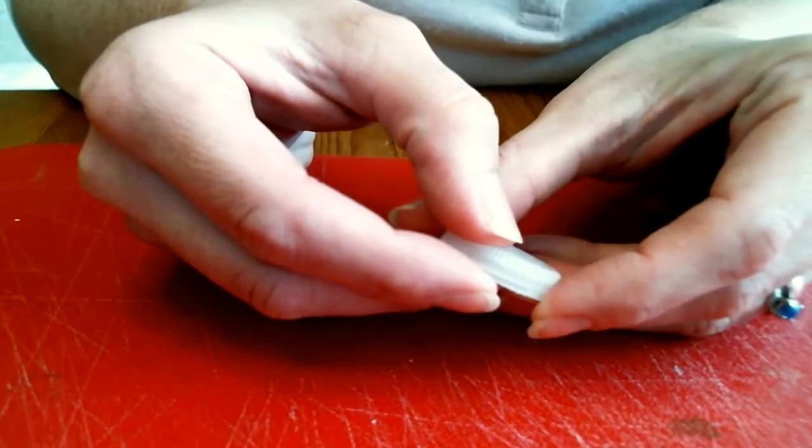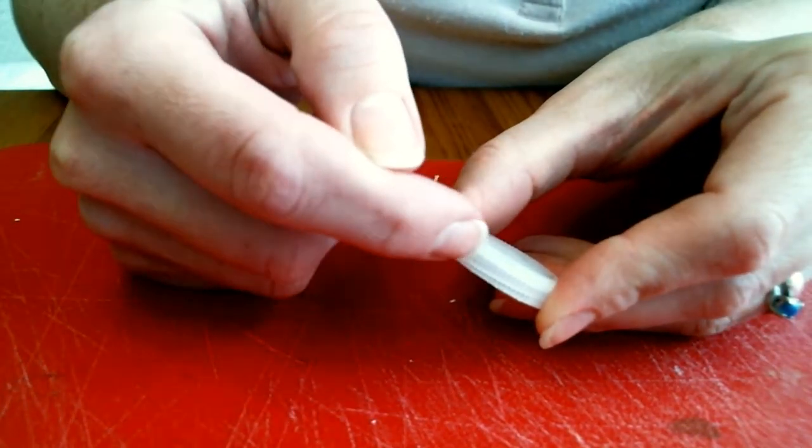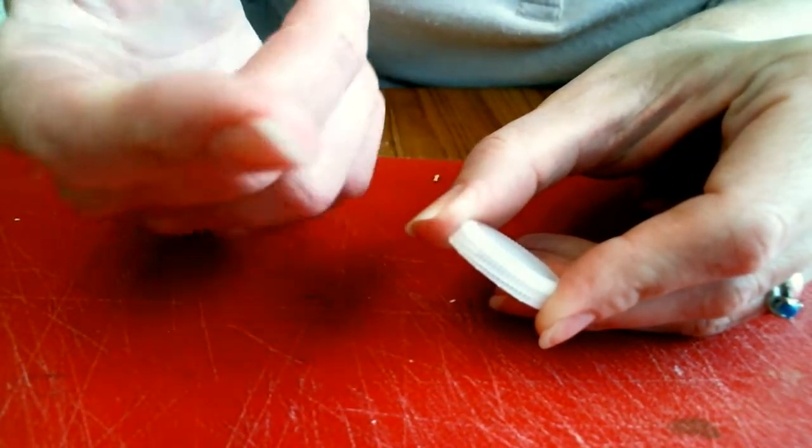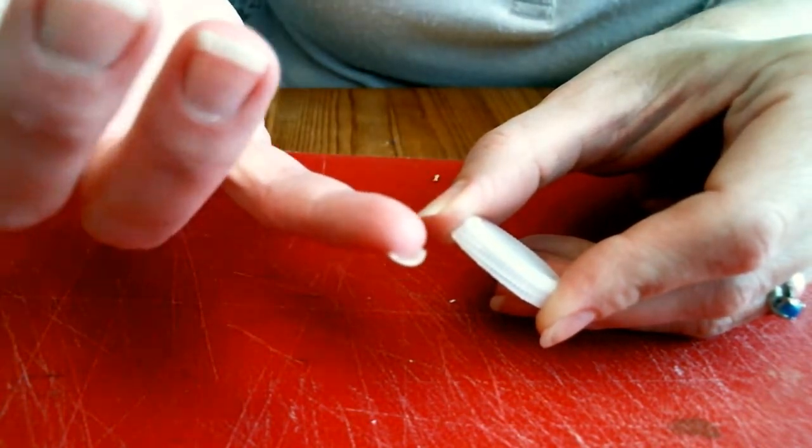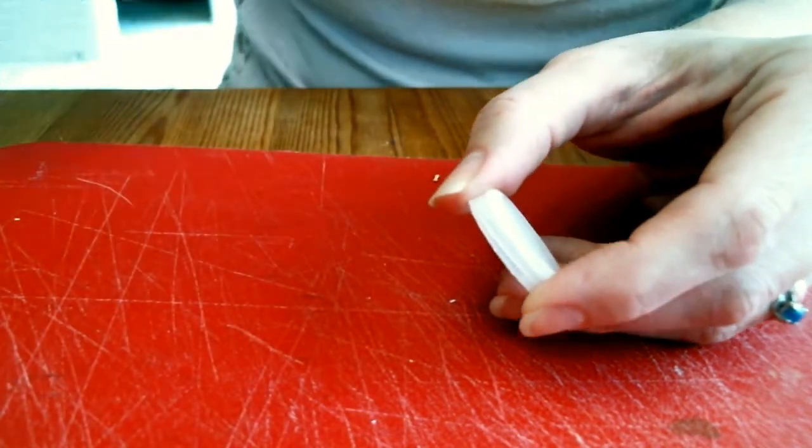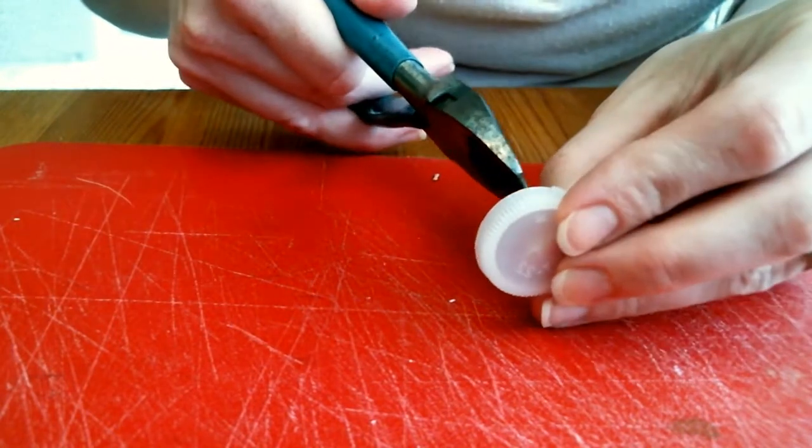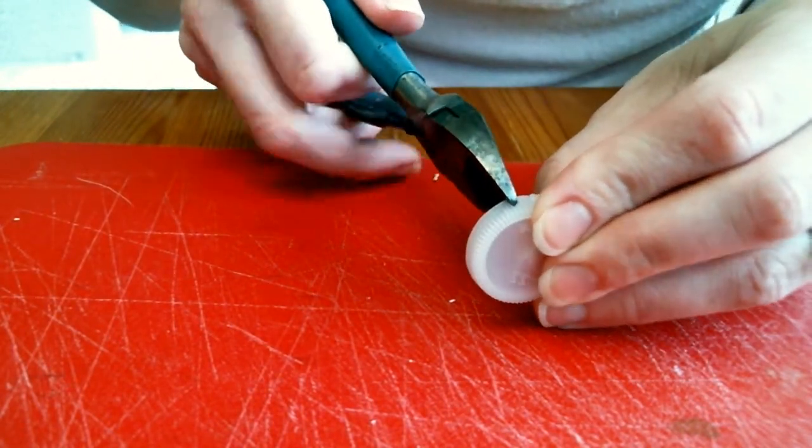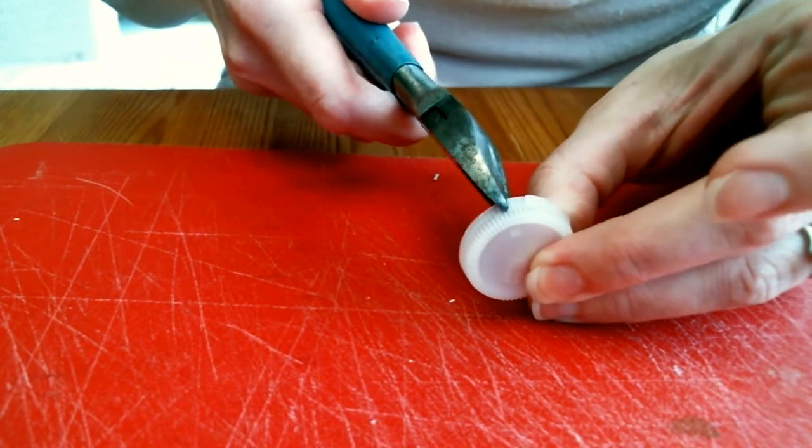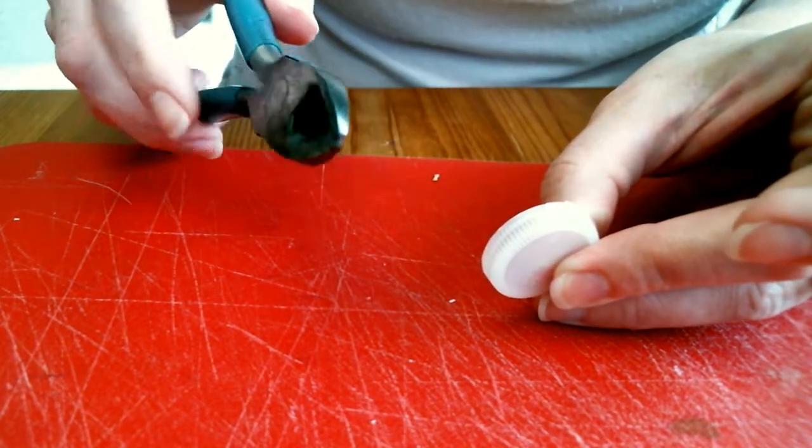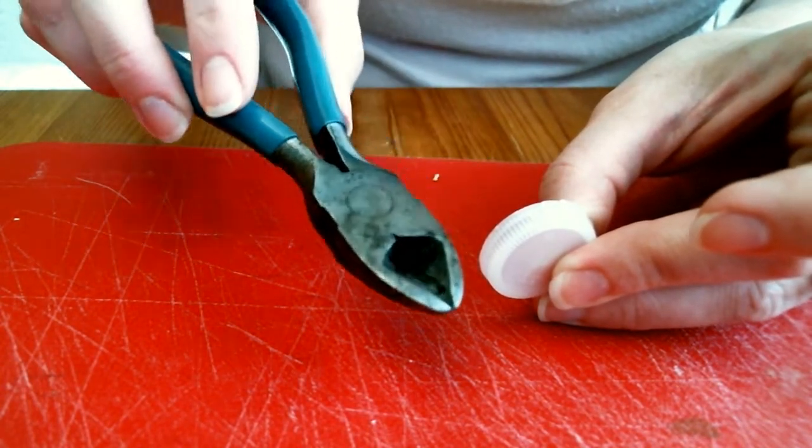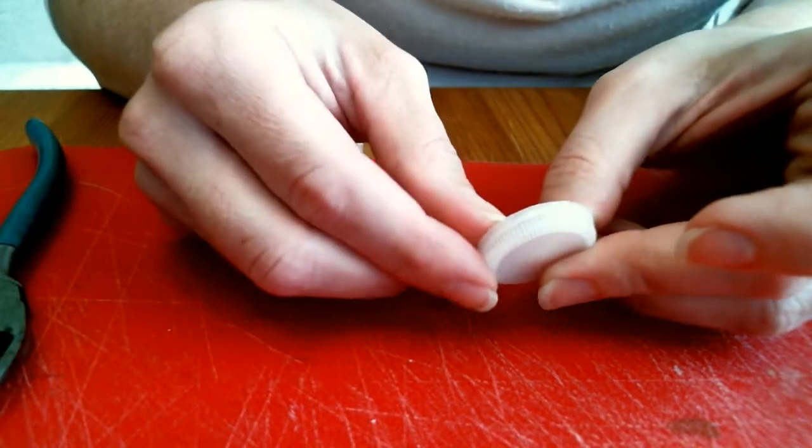As you can see on this bottle, there's a ribbing effect that goes around the bottle, obviously so it's easier to open, but in this case it comes in handy. Because what I do is I take my wire clippers, you can also just use nippers if you want to, and about every third rib I nip into the bottle cap. But the important thing here is that I don't cut all the way down and through to the base of the cap.